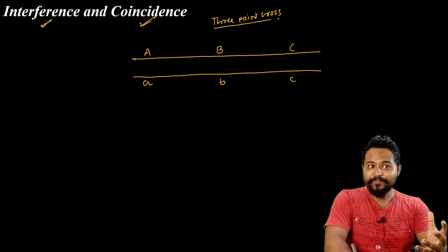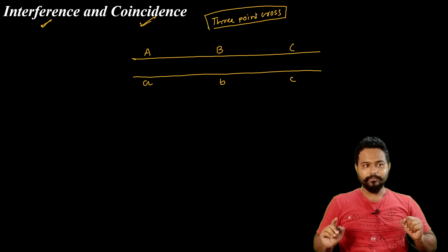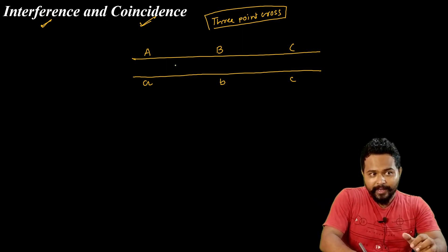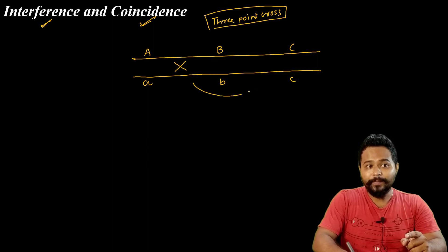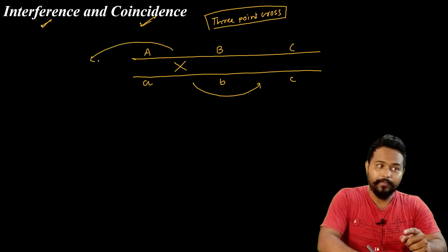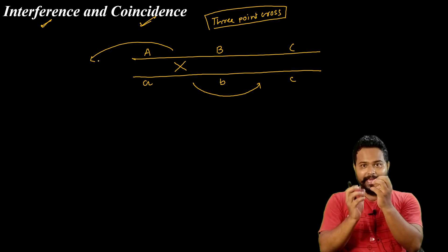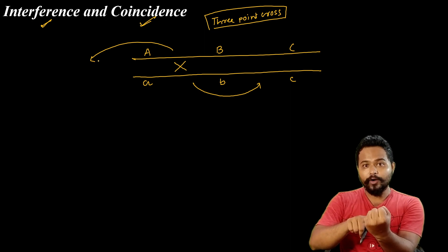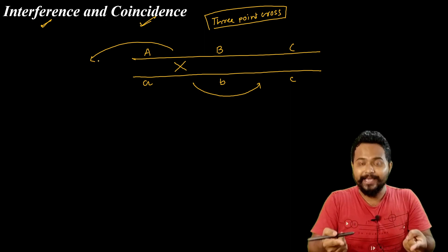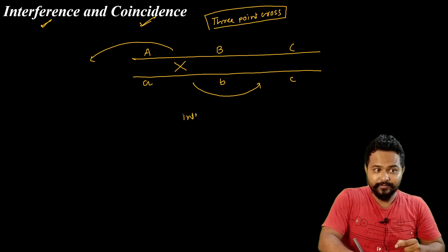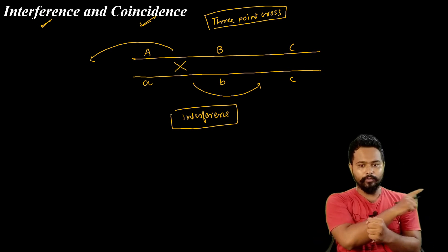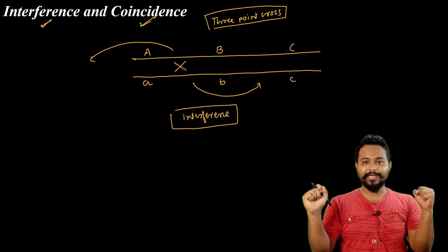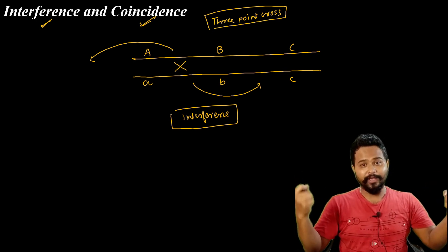Interference and coincidence are related concepts. Interference means that if a crossing over event occurs at one point, it inhibits or blocks another crossing over from occurring nearby. Simply put, interference means that if one crossover happens, it prevents a second crossover from occurring adjacent to it. This phenomenon is called interference.